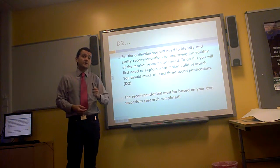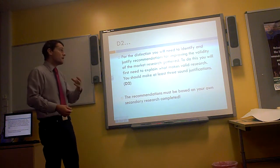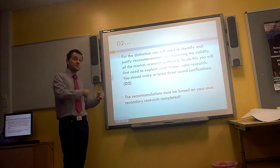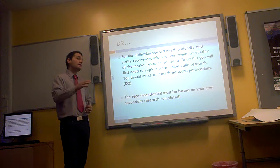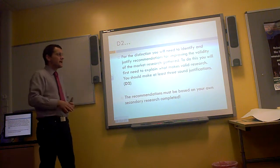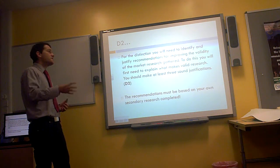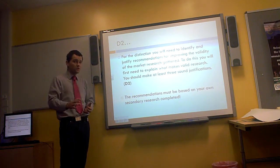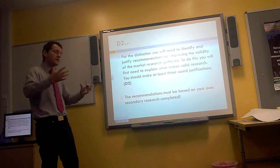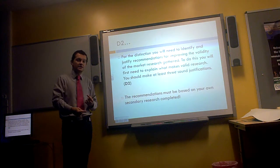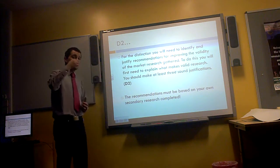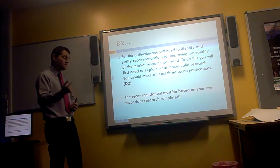Because this is a distinction criteria, you're going to need to reference. So that means you're going to need to go online, you're going to need to find out, well, what do other people say about improving the validity of market research? What do businesses or other businesses do that you think makes very valid research? So you're going to have to spend a little bit of time reading around this subject. It's not a massive distinction criteria. I think really what you're looking at here is maybe just a page and a half. So half a page for each recommendation. What you must make sure though, is the recommendation is justified and valid for Highbury College. It can't just be ask more people. Well, anyone can say that, can't they? There's no logic behind that, there's no justification, there's no real theory. So you need to make sure that your ideas are backed up with justifications and evidence. Really, really, really important.